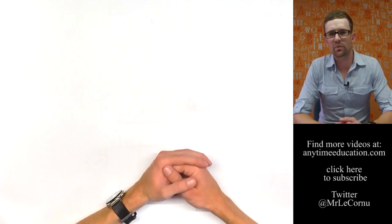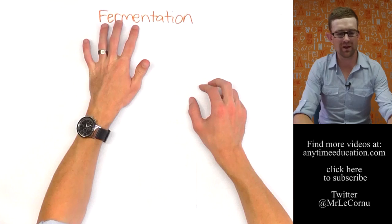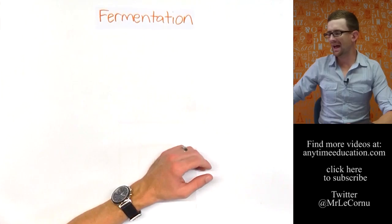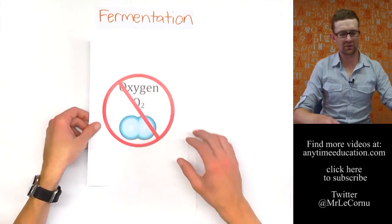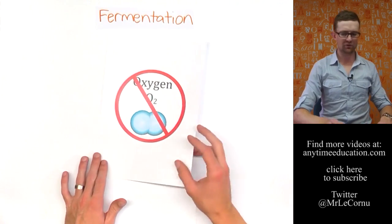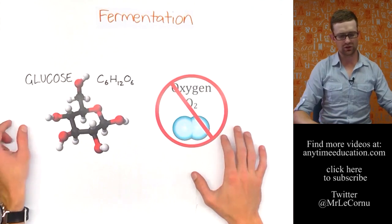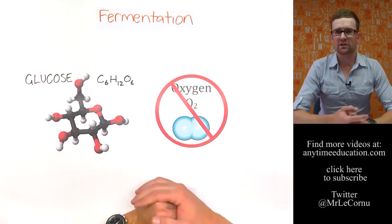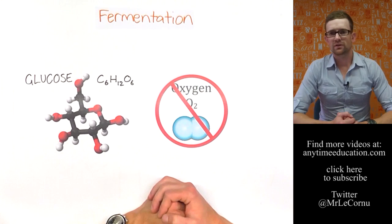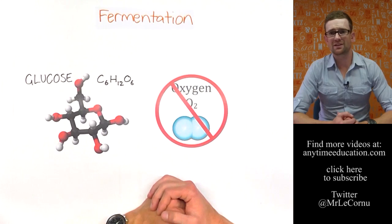That's been aerobic respiration. There's another type of cellular respiration called fermentation or anaerobic respiration. It's called anaerobic because it happens when there is no oxygen available. It's still the breakdown of glucose, but the breakdown of glucose with no oxygen. To find out more about this process, check out the video called What is Fermentation or Anaerobic Respiration? Hopefully this lesson has helped you to understand aerobic respiration. Thanks very much for watching and we'll see you next time.